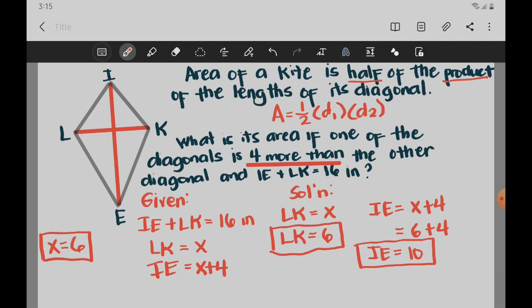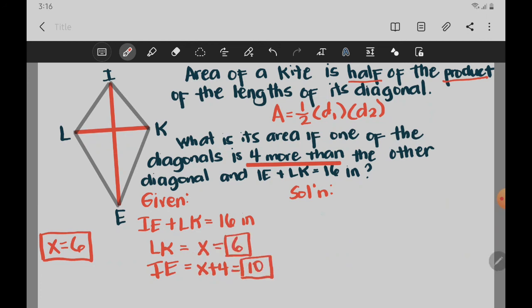Now let us answer the question, what is its area? So for us to get the area, we need to use the formula. So we have A is equal to one half multiplied by D1 multiplied by D2. So the value of D1, which is 6, we substitute it and D2 is 10. And then solve.